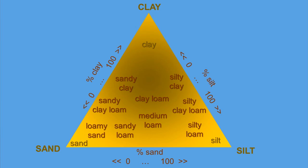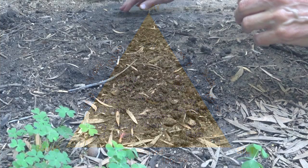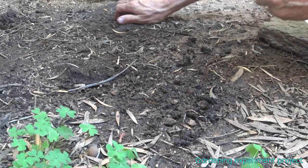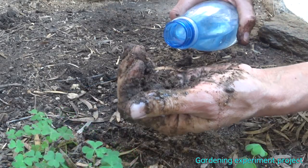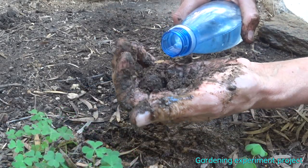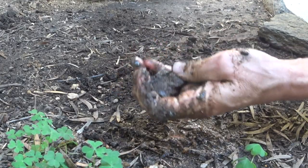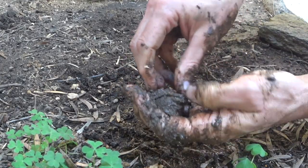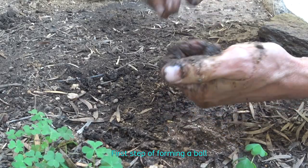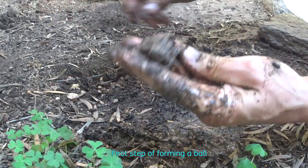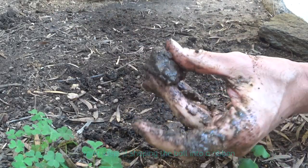These categories can be estimated with a simple field test, using a small pinch sample of a sediment and then adding a little bit of water to form a ball. Next, you try to shape the ball into a ribbon, and you can observe the length and the texture of the ribbon.